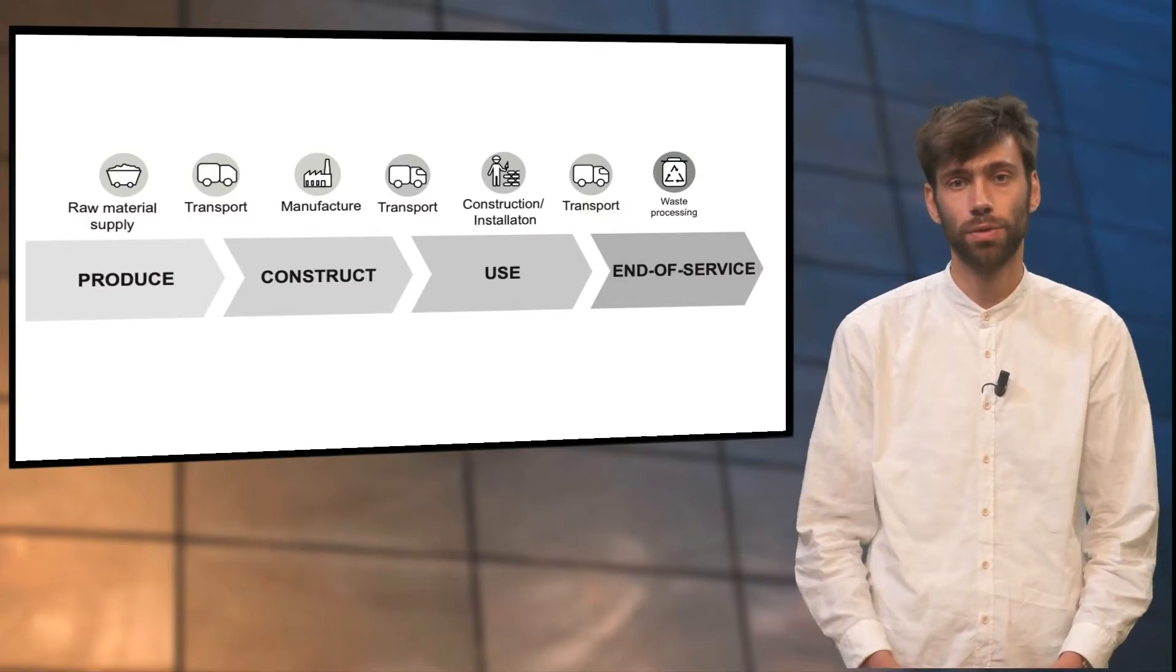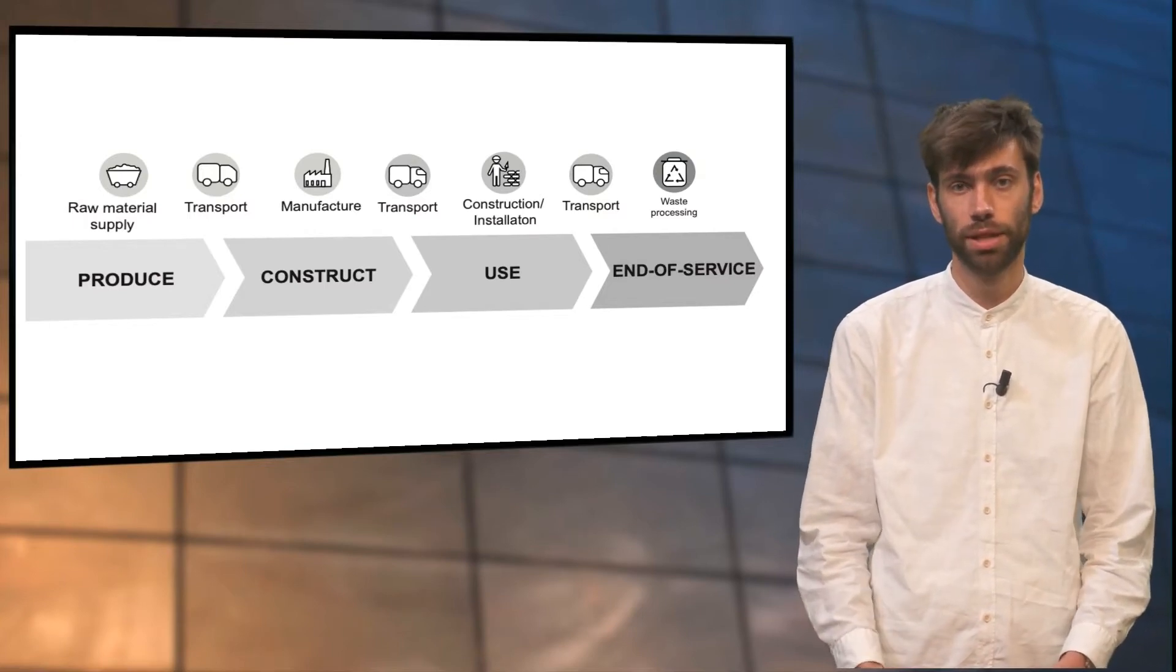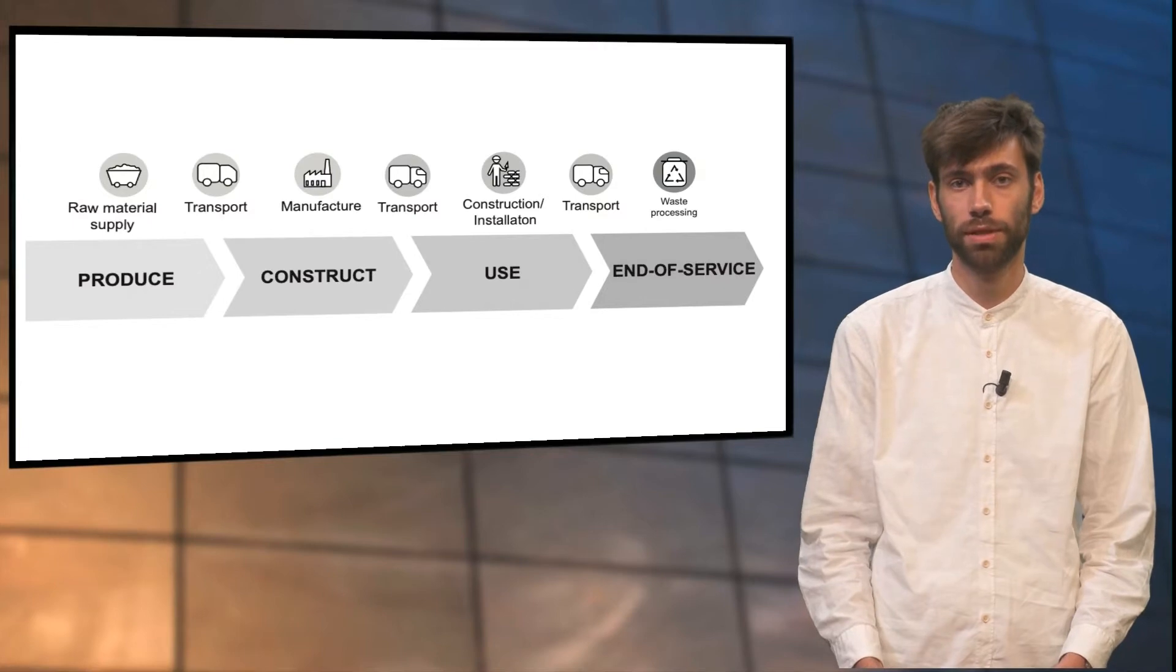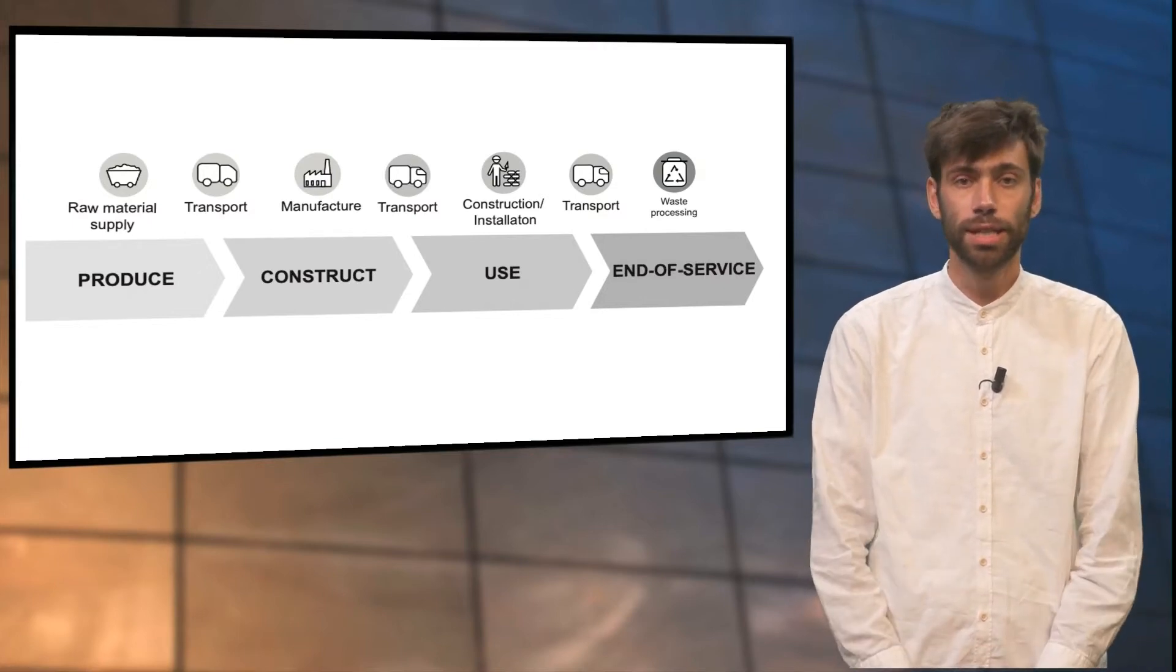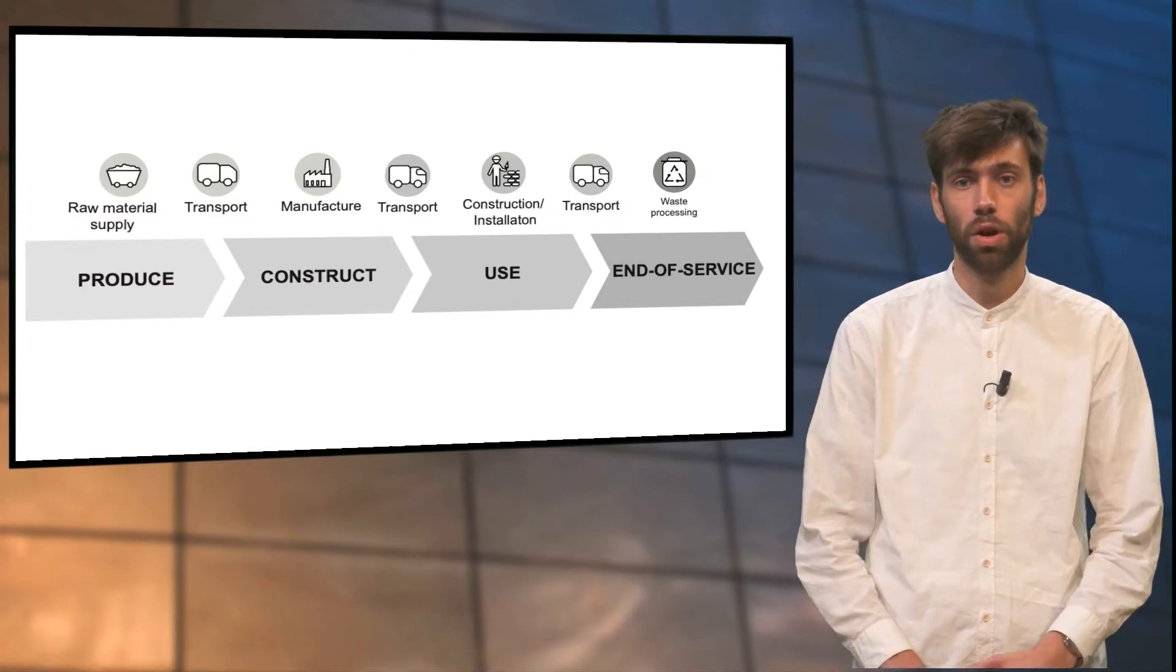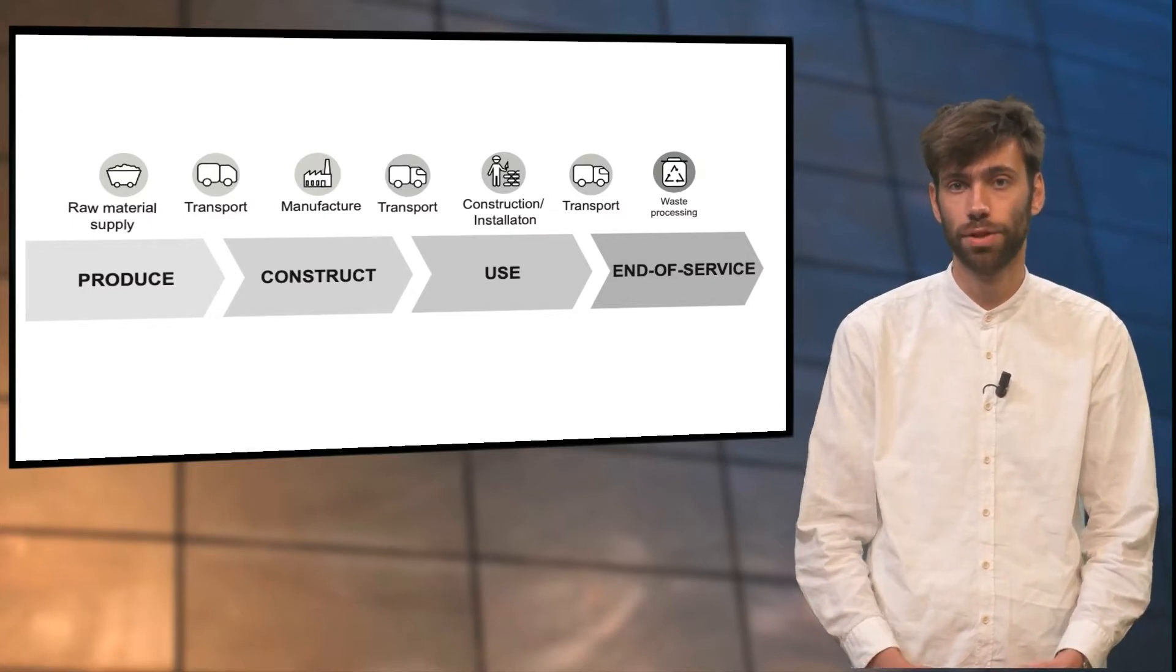In this exercise we ask you to map the value chain from raw materials via production to construction and waste treatment of one of the five most used building materials in your city or country. This exercise allows you to understand which elements of the value chain are already circular or have the potential for circularity.